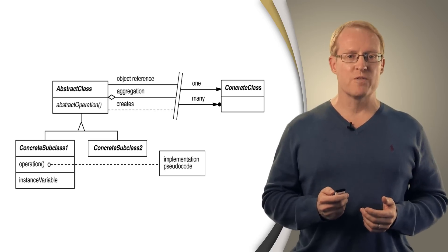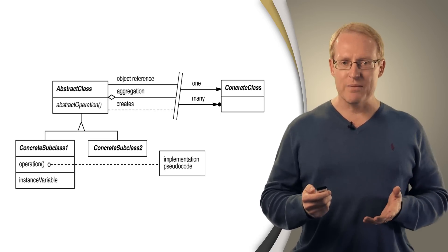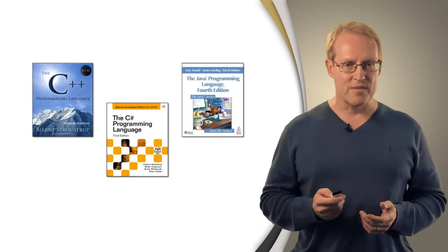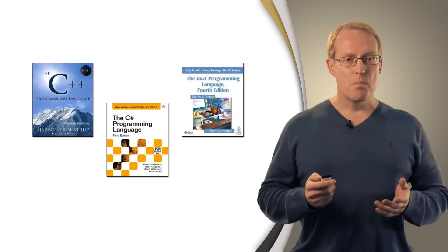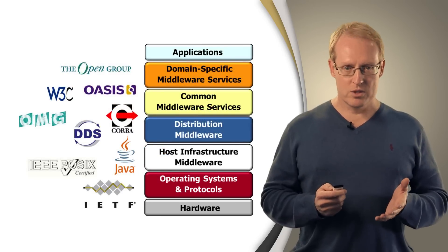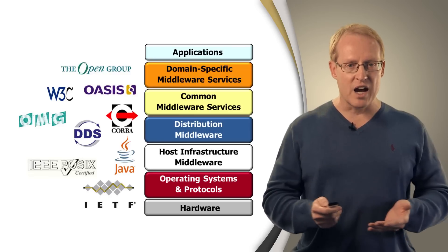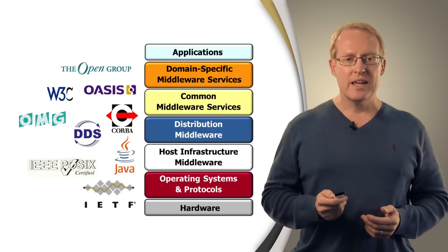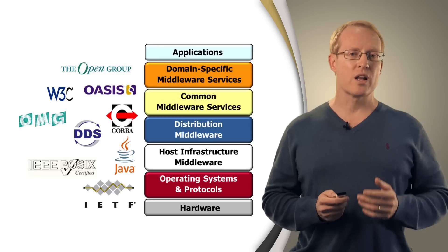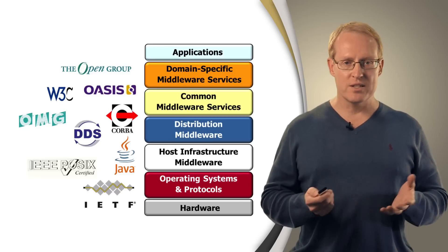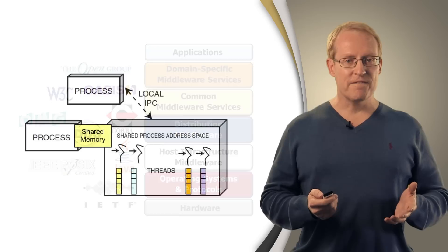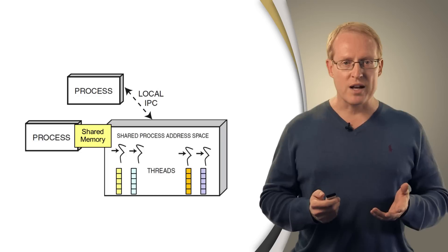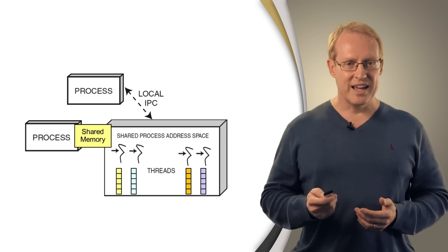Object-oriented programming language features, such as classes, inheritance, dynamic binding, and parameterized types that are available in popular programming languages, such as C++, Java, and C Sharp. Middleware, which is reusable infrastructure software that resides between the applications and the underlying operating systems, networks, and hardware that encapsulates heterogeneity and enables control over key end-to-end quality of service properties, such as dependability and security. And finally, operating system mechanisms, such as local and remote inter-process communication, multi-processing, multi-threading, synchronization, and dynamic linking.